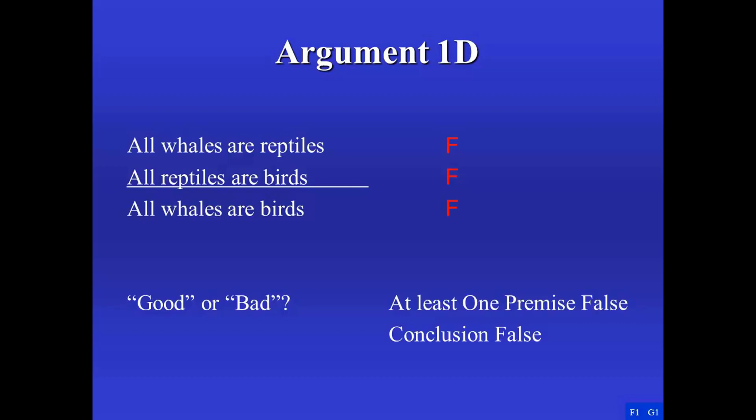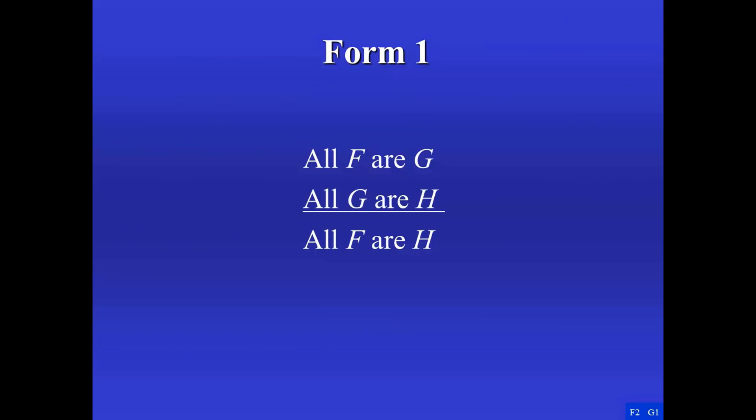All three arguments are of the same form: All F are G, all G are H, therefore all F are H. Since we don't know what F, G, and H are, we don't have to worry about whether the claims are actually true. We can focus on the connection between the claims. Suppose all F's are G's and all those G's are H's — mustn't it be the case that all F's are H's? If those two premises were true, the conclusion would have to be true as well. This property is called deductive validity, and we'll see our official rigorous definition of deductive validity shortly.